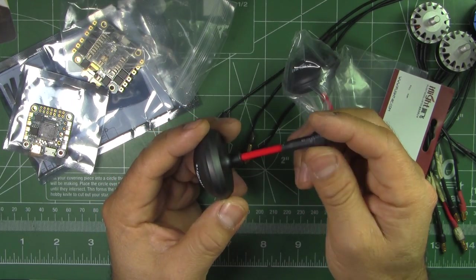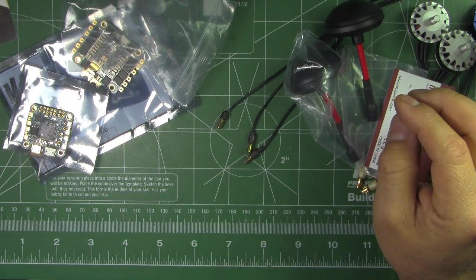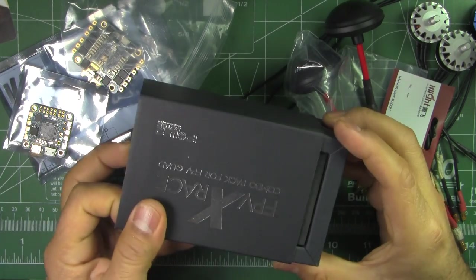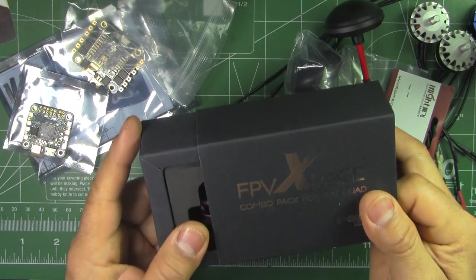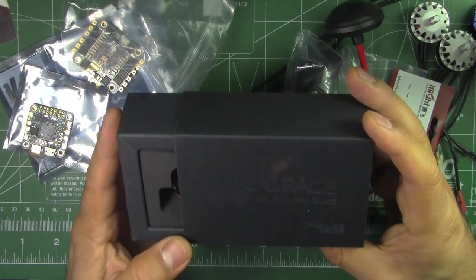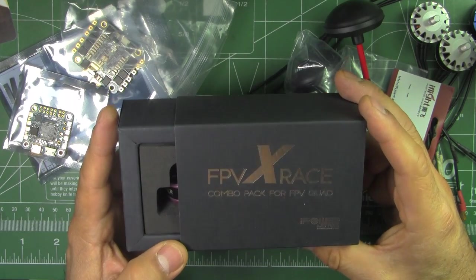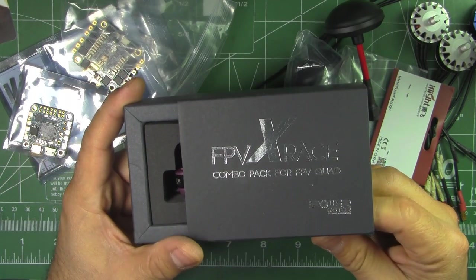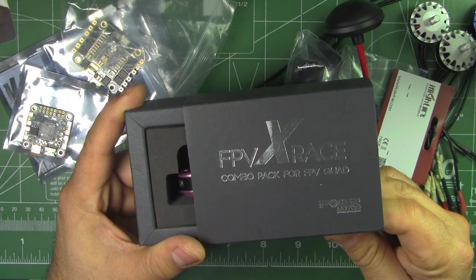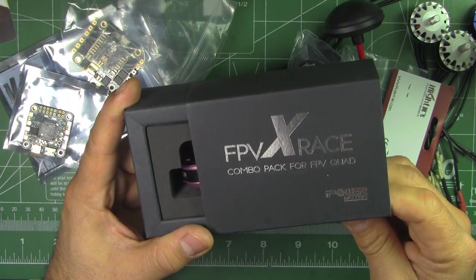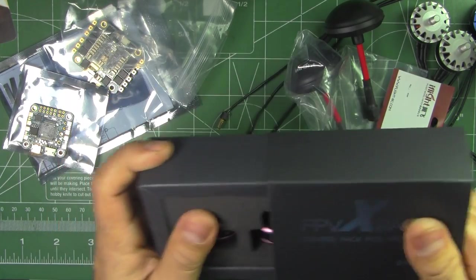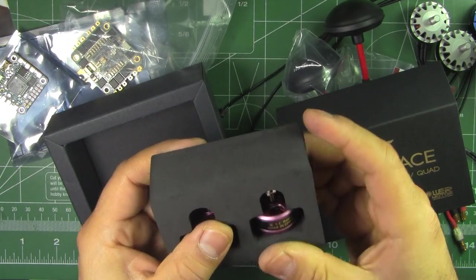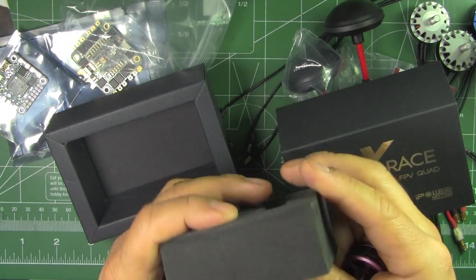And they also sent me, I don't do unboxings, but I just want to show you the box where their motors come. They call them FPV X-rays, and these are X-ray X2205. Nice box - this could be used for mounting cameras or something.